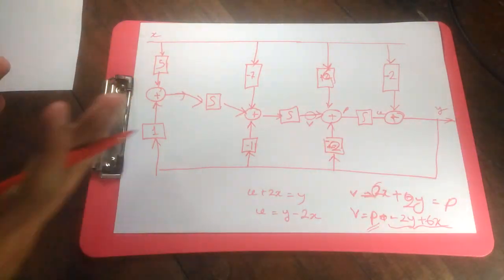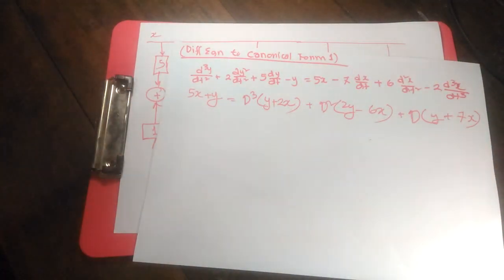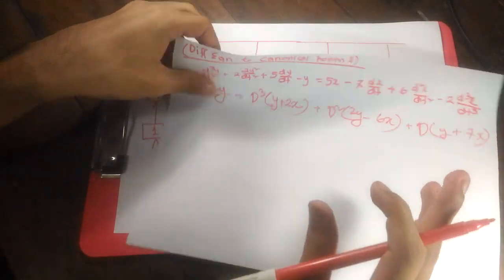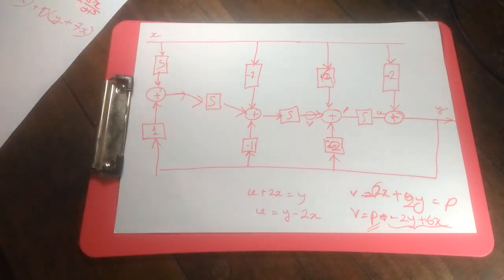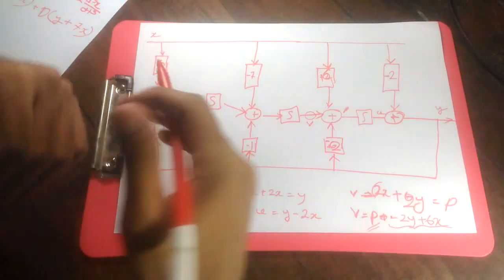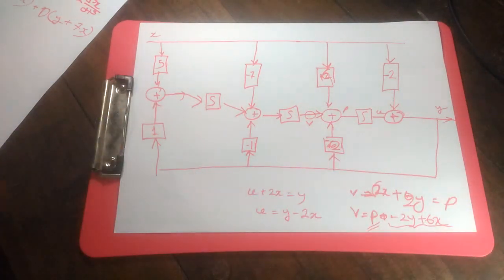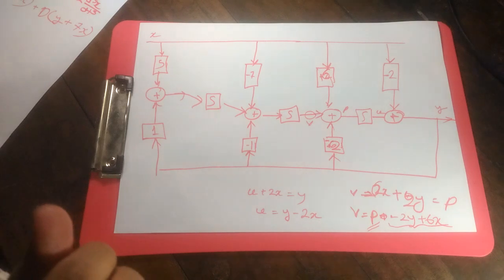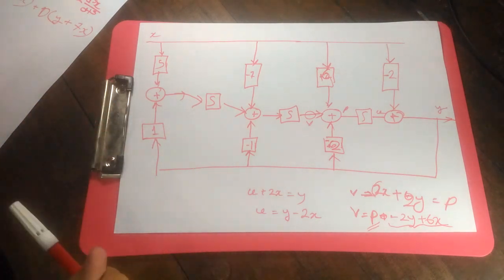So that's the complete simulation diagram for our differential equation. The working rule is: make two distinct sides — one without derivatives and one with derivatives. On the left-hand side, equate the terms without derivatives. On the right-hand side, decide which terms go through three integrators, which through two, and which through one — and that's the algorithm for simulation diagram canonical form 1. In the next video we'll understand canonical form 2. Thank you.